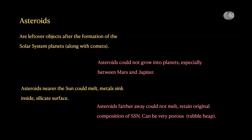Asteroids nearer the sun could melt, and if they melt, metals sink inside to form a metallic core with silicate on the outside — these are brighter objects. Asteroids farther away could not melt and retain the original composition of the solar nebula. They can be very porous — if something collides and sticks together there could be cavities inside. As it collects more matter it stays porous rather than melting into a dense object. These are called rubble heap asteroids — their overall density can be very, very low even though they are made of rocks.